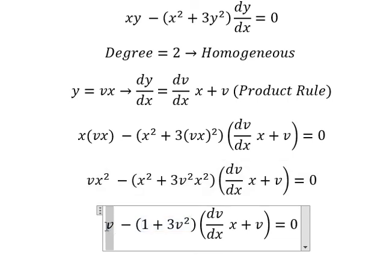Next, I will put v go to the right. And we divide both sides by negative 1 plus 3v square.